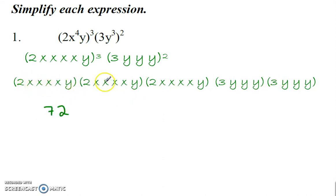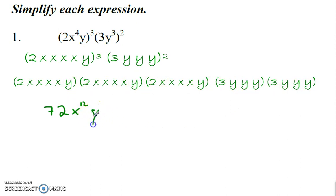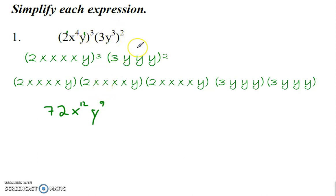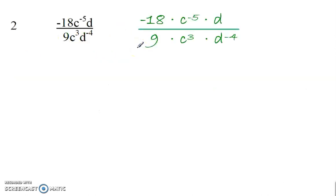And then we have four factors here, four there, four there, and that gives us x to the twelfth power. And 3 and 3 and 3 gives us y to the ninth power. You could also multiply up here — that's 2 to the third power. 4 times 3 is 12. And then 3 times 1 is 3, 3 times 2 is 6, and 3 and the sixth gives me the ninth power.